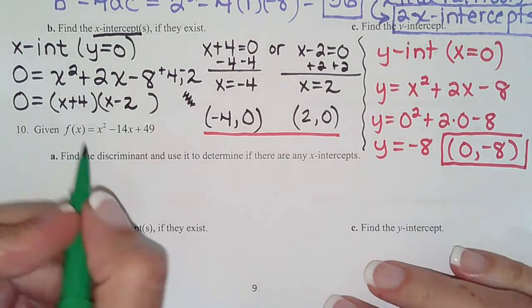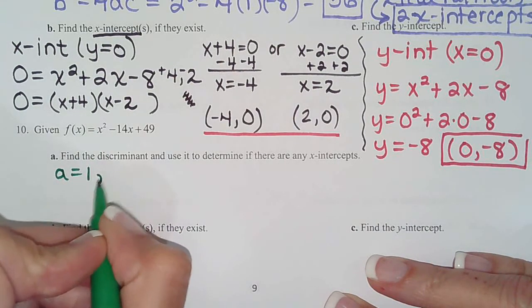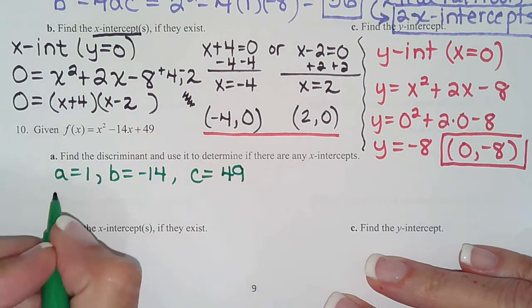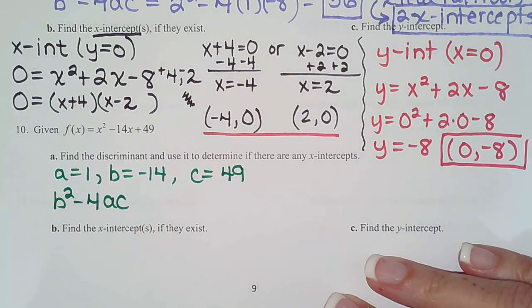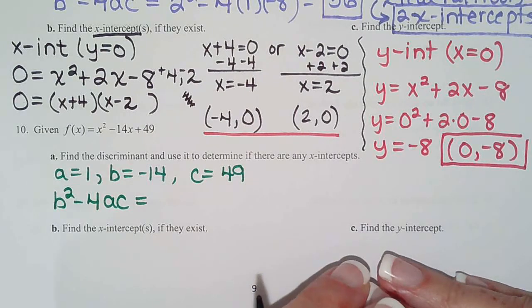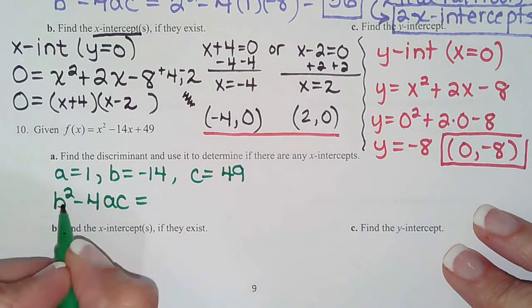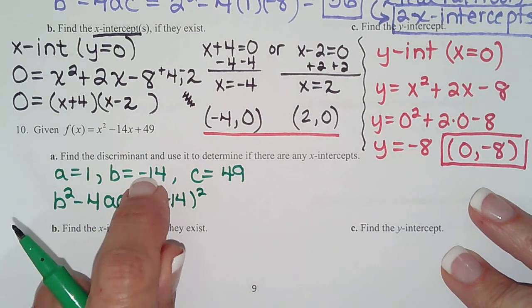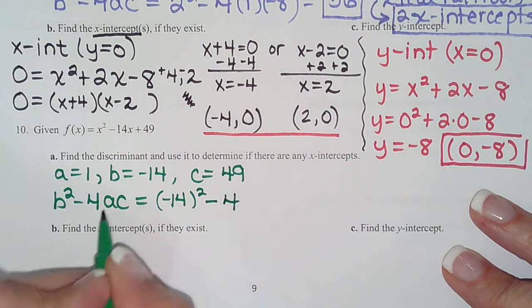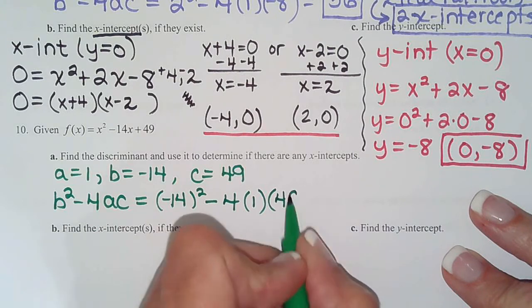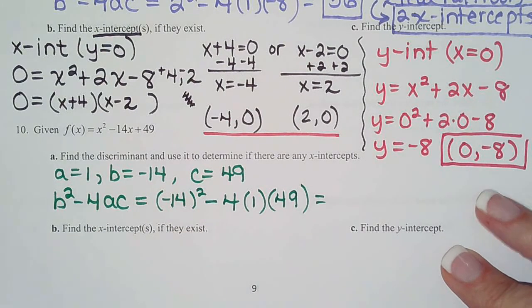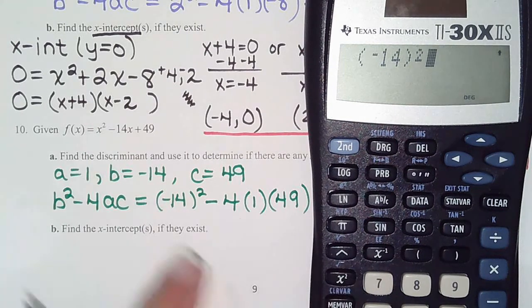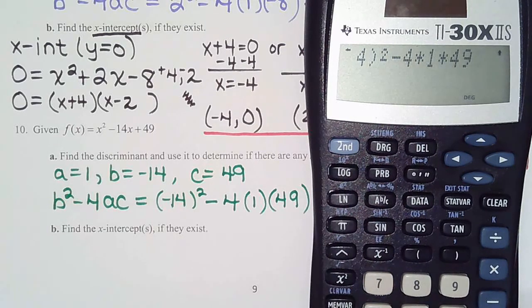OK, find the discriminant. So we have a is 1, b is -14, and c is 49. So we want to find b² - 4ac to see what kind of graph we're dealing with. Is it going to have 1 x-intercept? Is it going to have 2 x-intercepts? Is it going to have no x-intercepts? So b is negative. Remember what we said earlier. It must be in parentheses or your calculator will give you the wrong answer when you type it in. So anytime the input is negative, put it in parentheses. Minus 4 times a, which is 1, times c, which is 49. And let's go ahead and type that in. So parentheses, -14, close parentheses, hit your squared, minus 4 times 1 times 49. Zero.